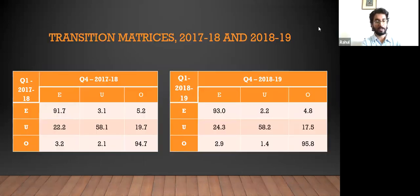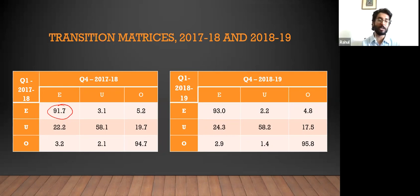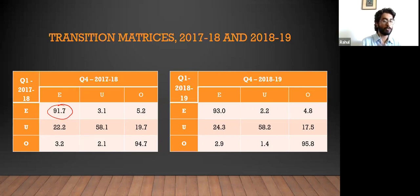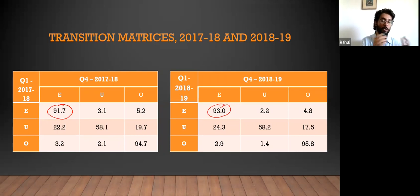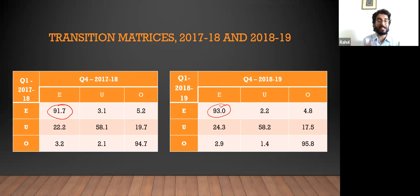These are our transition matrices. In 2017-18, 91.7% of all employed individuals in the first quarter retain their employment in the fourth quarter. In 2018-19, a similarly high proportion of those employed in the first quarter are employed in the fourth quarter. We don't know if they changed jobs — that we are unable to see with this data. But this is a very interesting way to look at the labor market in ways not done before.